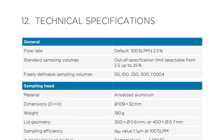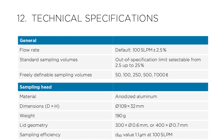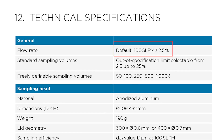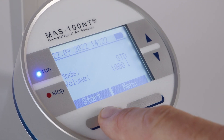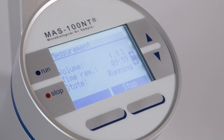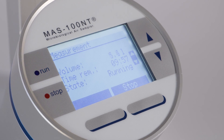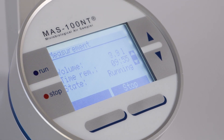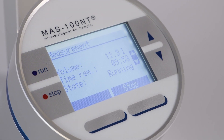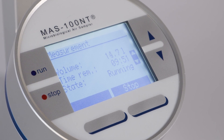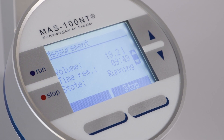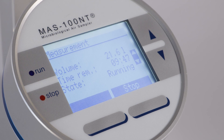Every air sampler specifies the precision of the airflow in the manual. In the case of the MS100NT, this is 100 standard liters per minute plus minus 2.5%. So, in 10 minutes, the instrument will sample 1000 plus minus 25 standard liters. Which means, in 50% of cases, the MS100NT will sample slightly less than 1000 standard liters.